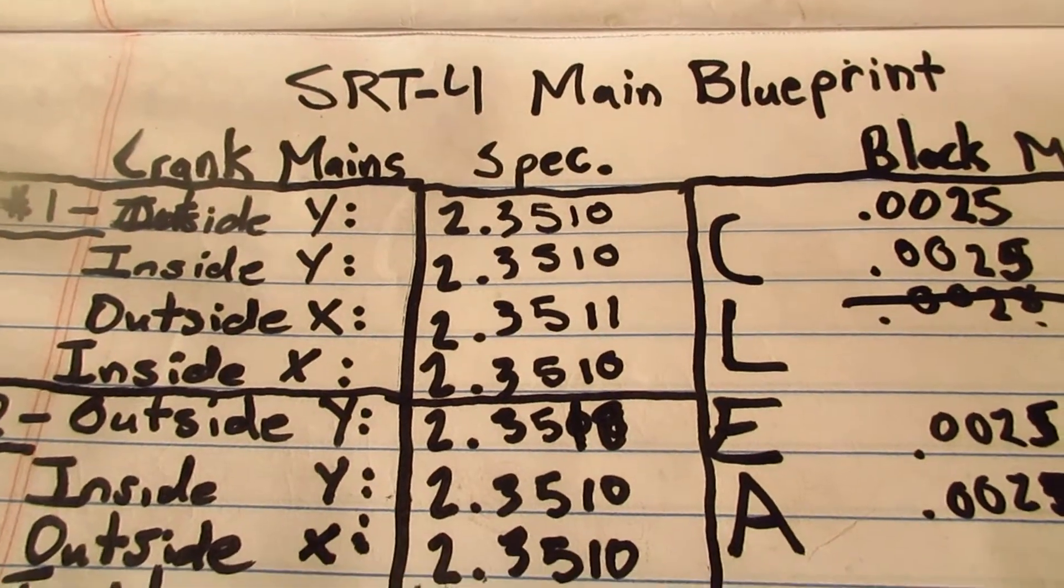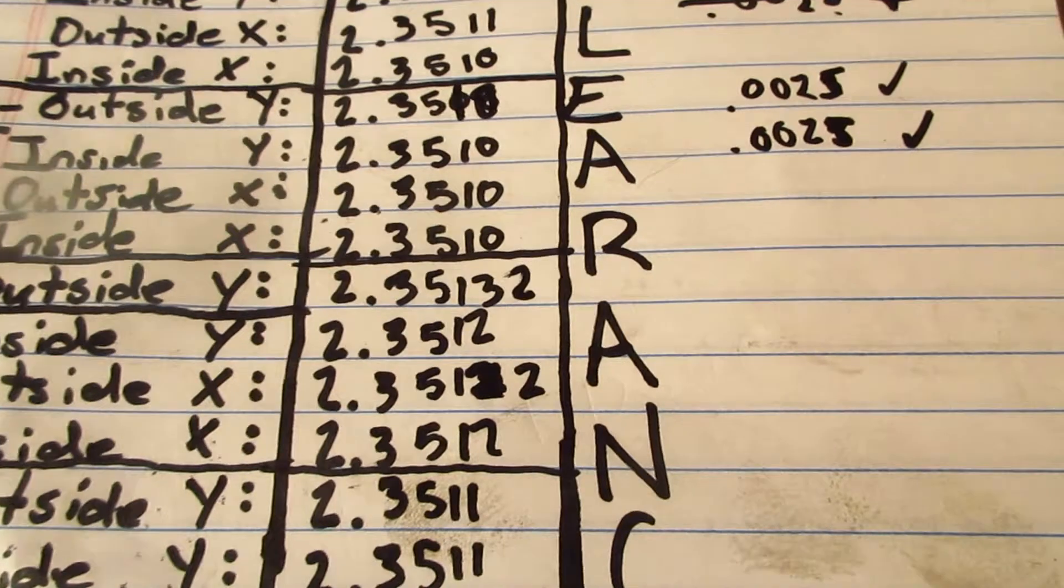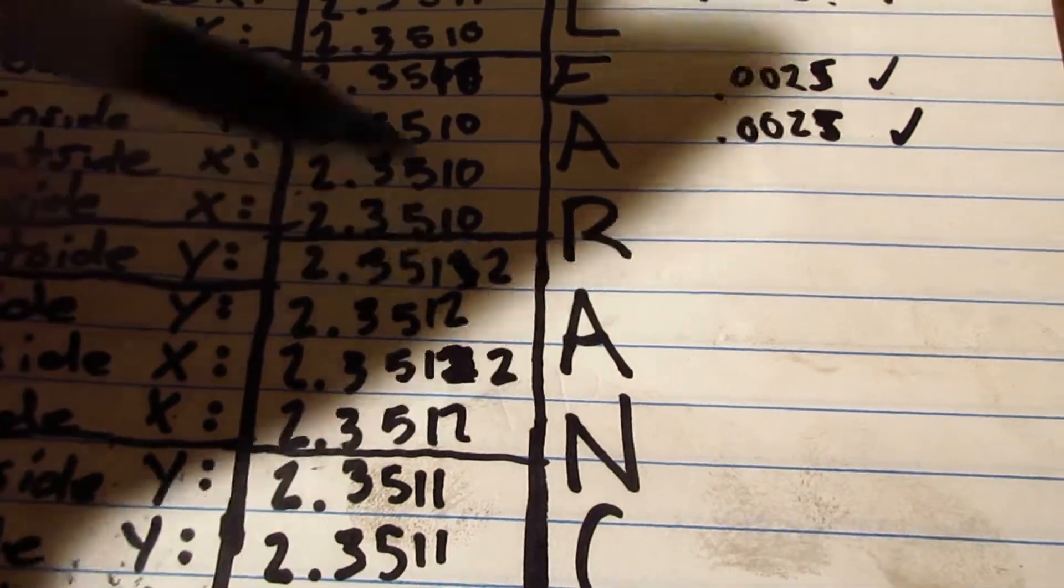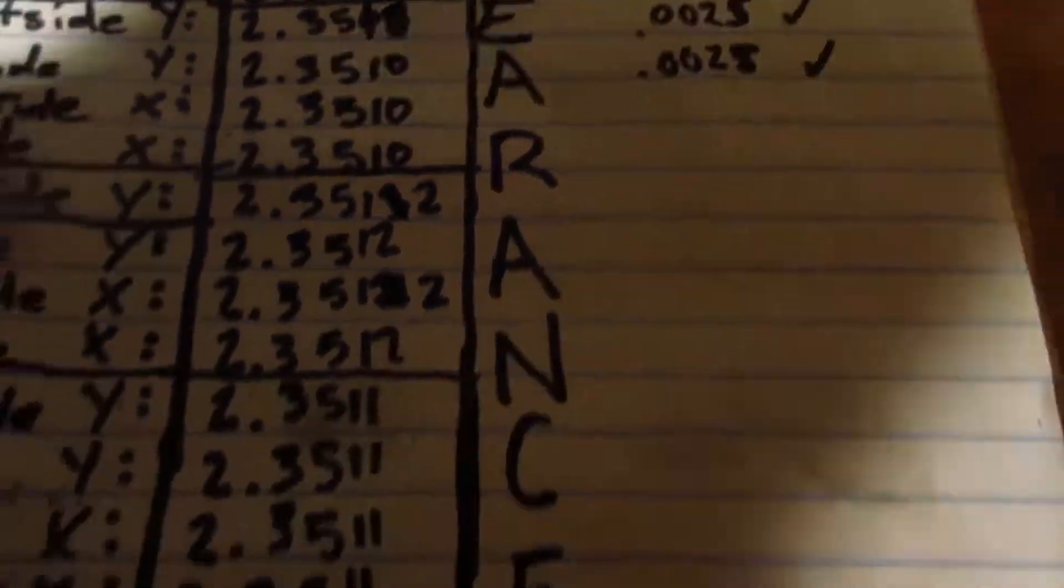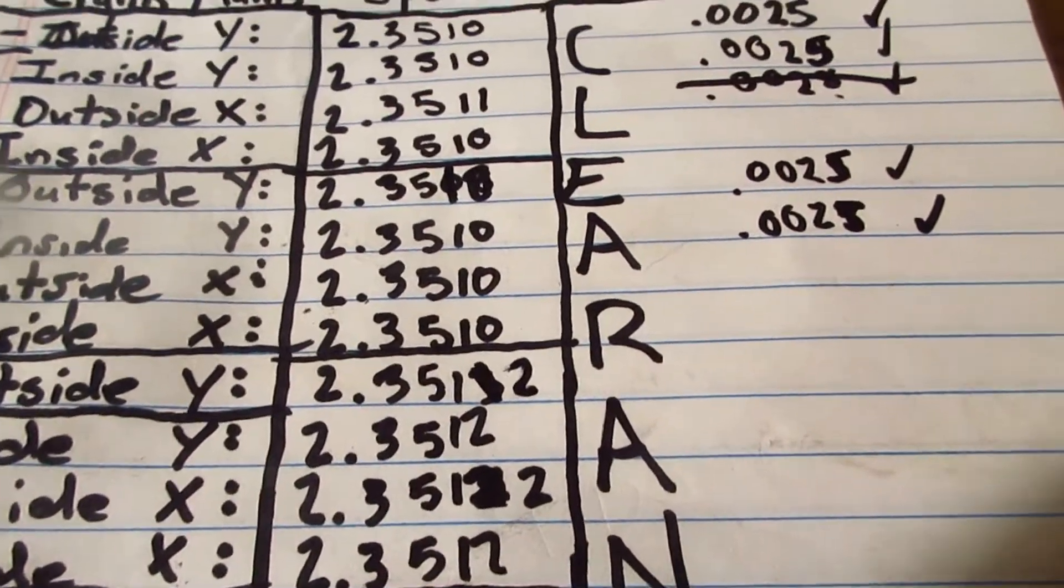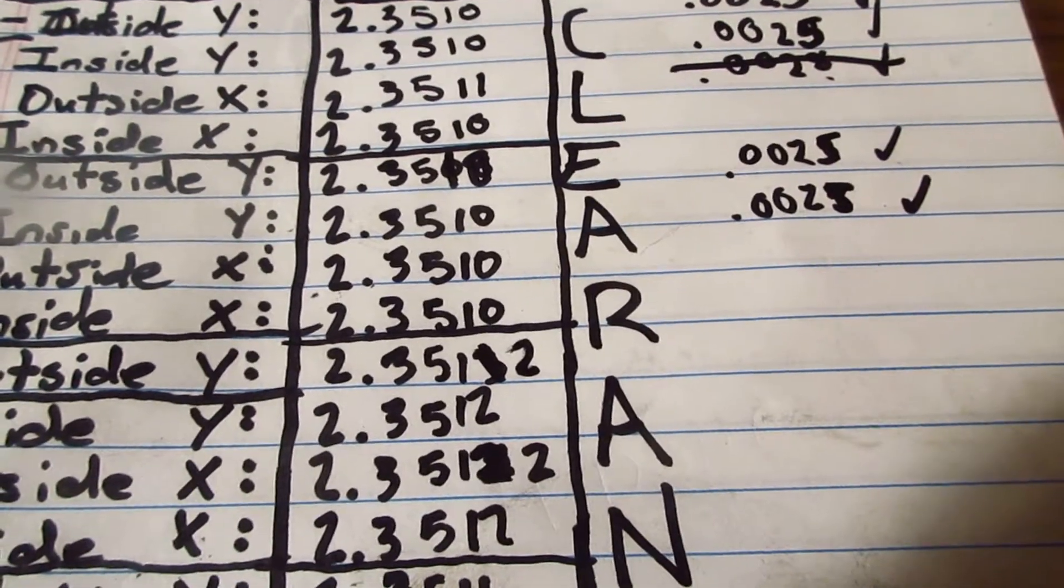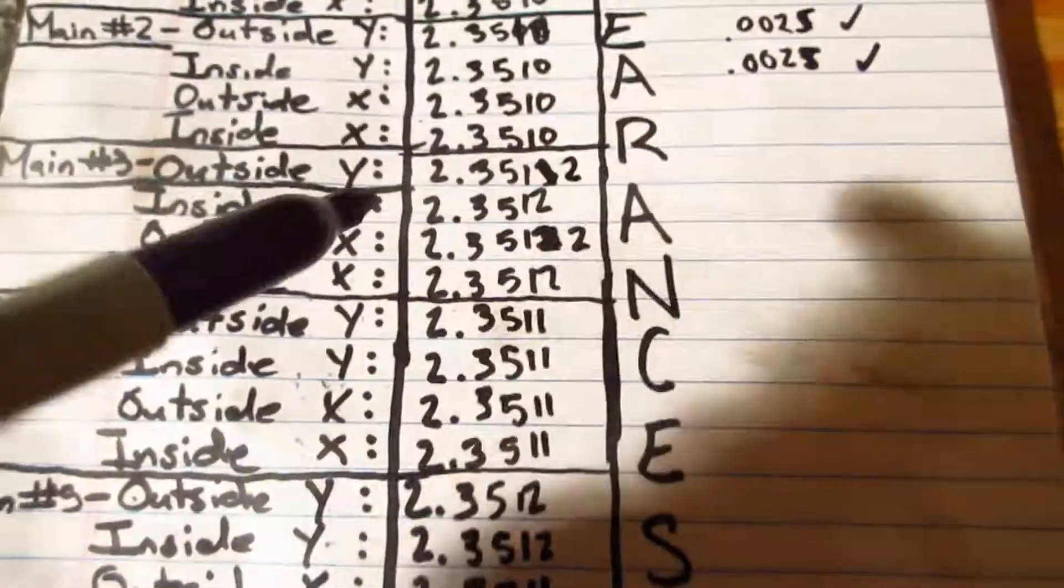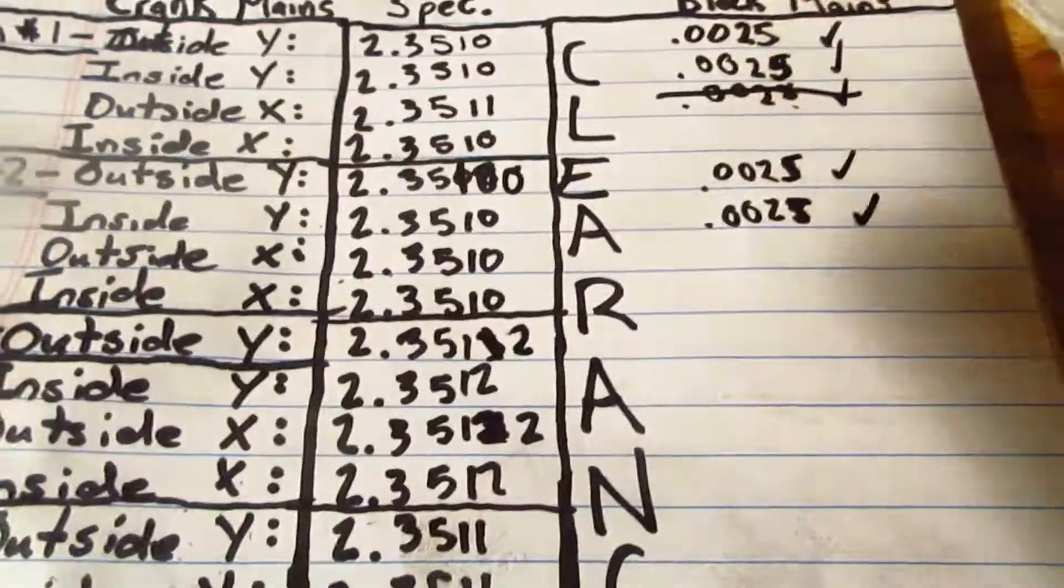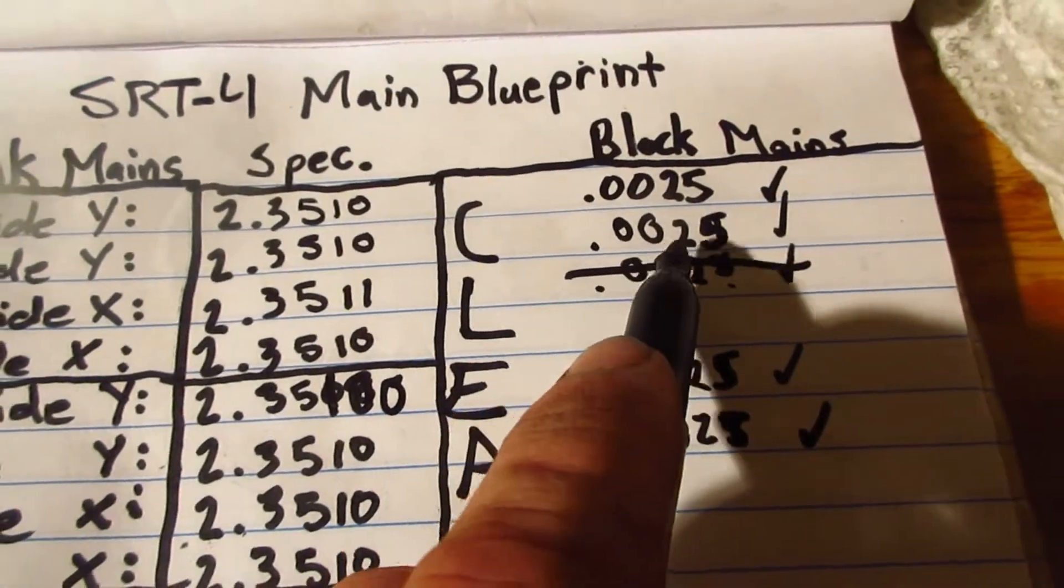All right guys, so far we're looking really good. That is a 1-0, a few of these I had to re-measure. So we're all within plus or minus 1 to 2 ten thousandths of an inch. Some of these mains were perfect. You can't really expect all of them to be perfect with a turned crank. If it was a stock crank I would expect everything to be good, but this is what our clearances are looking like so far which is perfect.